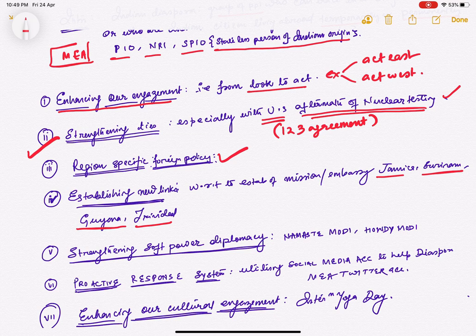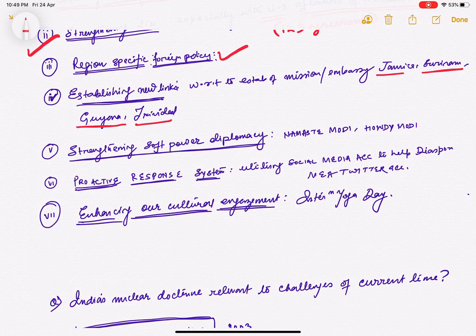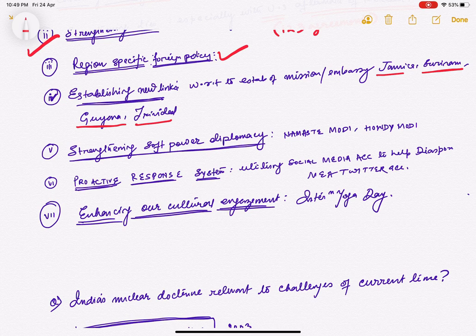Next, strengthening India's soft power diplomacy. How? Namaste Modi, Howdy Modi—showcasing India's soft power diplomacy. We are engaging with other countries through people, through cultural activities. Next, proactive response system. When Sushma Swaraj was the Minister of External Affairs, she continuously used Twitter to resolve the problems of any Indian or PIO who has been stranded outside India. That was one of the changes in foreign policy—a proactive response system for helping PIOs and people of Indian origin.